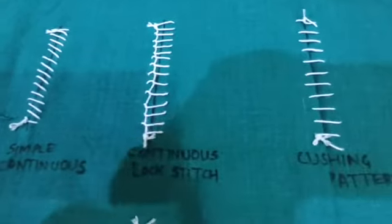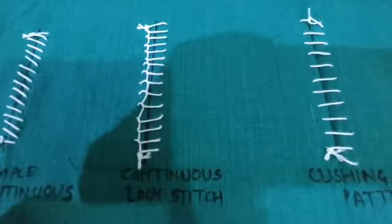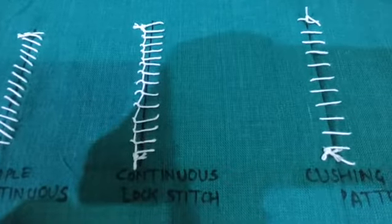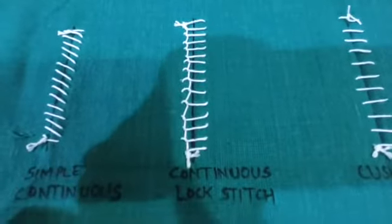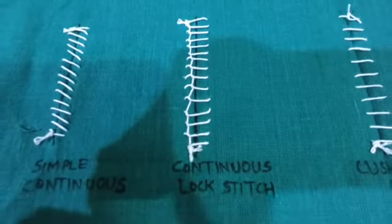The third one is the continuous lock stitch technique. It is also used for the apposition of the wound of the skin, esophagus, and muscles.